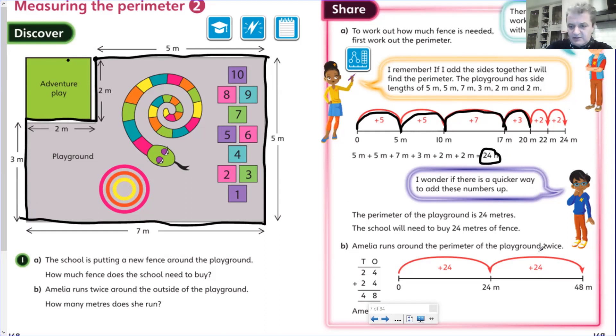What we can also do, if we want to, is we could have said, 'Oh look, I know my number bonds.' Five add five is 10. Group those together. Then I know that seven and three is 10. I've got two lots of 10, which is 20. And then I add two extra two meters. I've done it like that to end with 24.